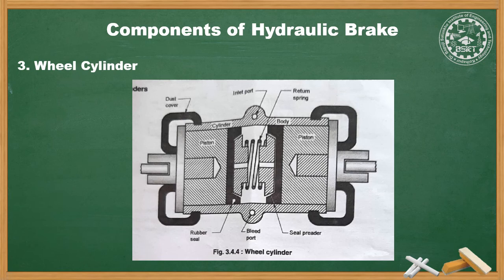The brake line from the master cylinder is connected to the inlet port, and a bleeder screw is provided to remove air from the system. When brake fluid from the master cylinder enters the inlet port of the wheel cylinder, it exerts pressure on the pistons to move outward against the drum. When the brakes are released, the brake shoe retractor spring forces the brake fluid out of the wheel cylinder by pushing the pistons inward. The wheel cylinder is used to expand the brake shoes and apply the brake.